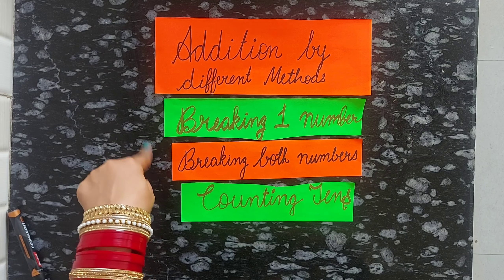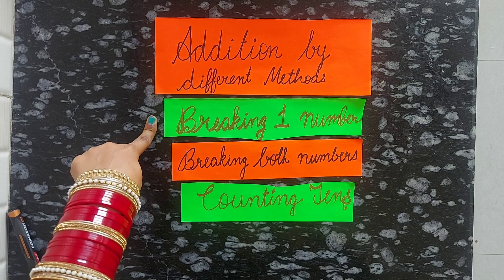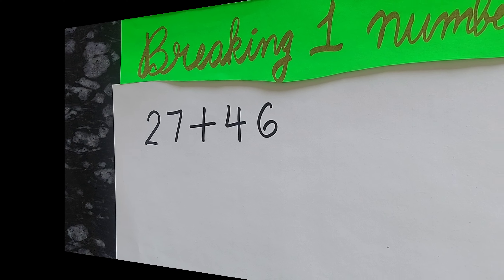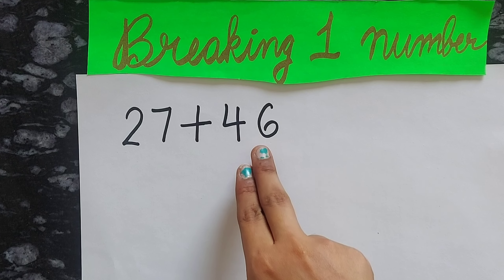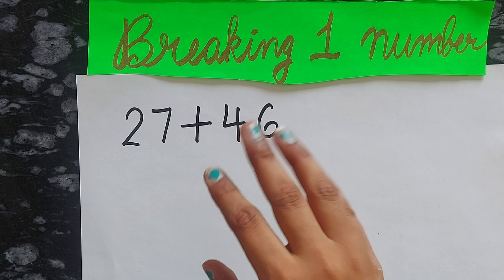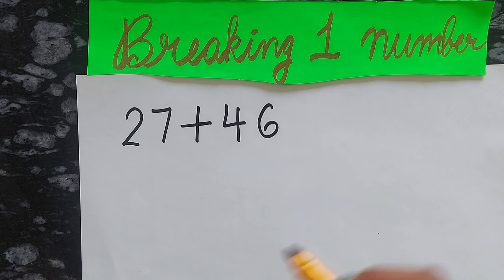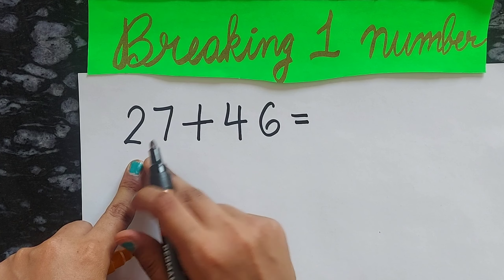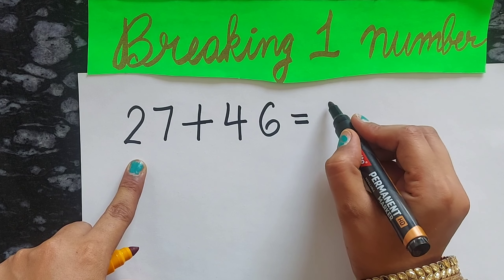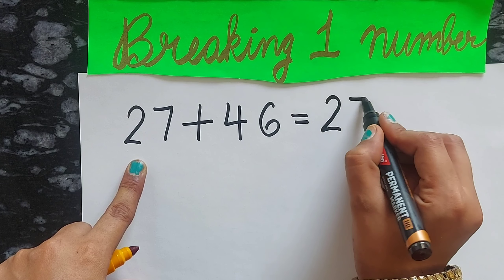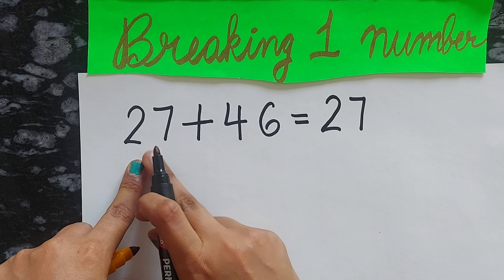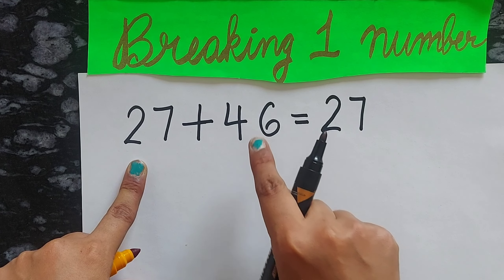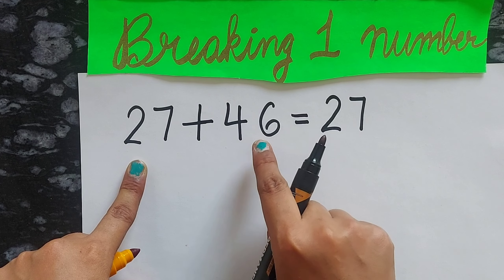Let's start with breaking one number. How do you break one number? Breaking one number means you have to break only one number. Firstly, we will write the first number the same as it is, because we have to break only the second number.